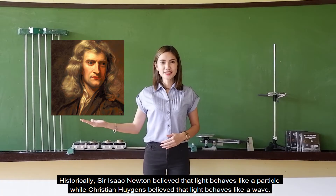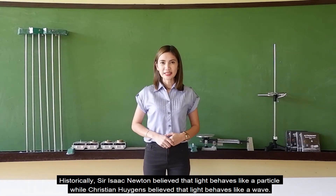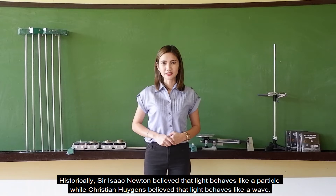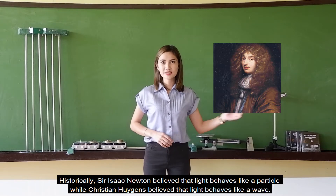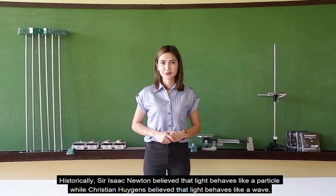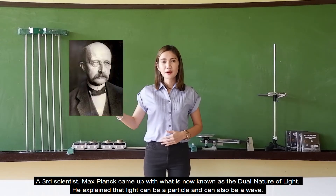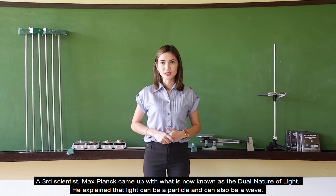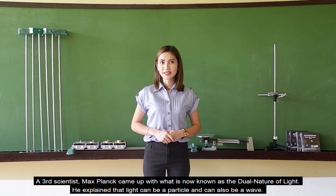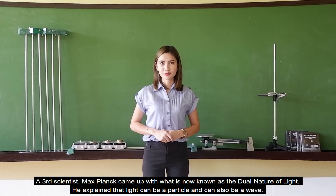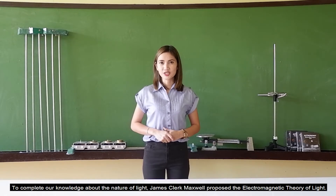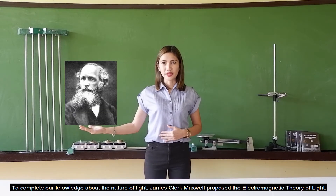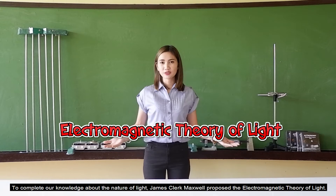Historically, Sir Isaac Newton believed that light behaves like a particle, while Christian Huygens believed that light behaves like a wave. A third scientist, Max Planck, came up with what is now known as the dual nature of light — he explained that light can be a particle and can also be a wave. To complete our knowledge about the nature of light, James Clark Maxwell proposed the theory of electromagnetism.